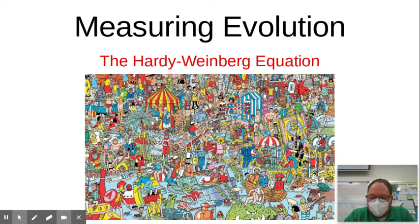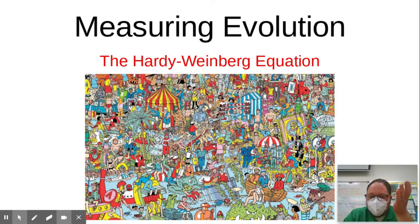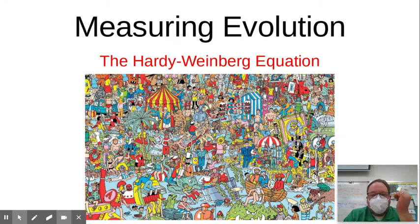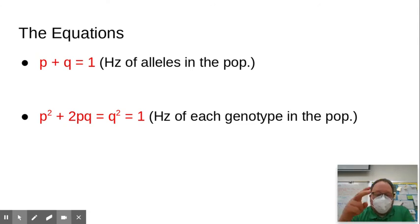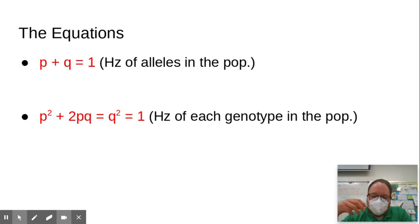We'll get things rolling back and be on pace again after spring break. So we're talking about Hardy-Weinberg. The idea of Hardy-Weinberg is to figure out: are populations evolving and how can we measure that? The purpose is to see how populations change over time, and that's done by looking at changes in allele frequency. These equations will be provided on the equation sheet on the AP Bio exam.